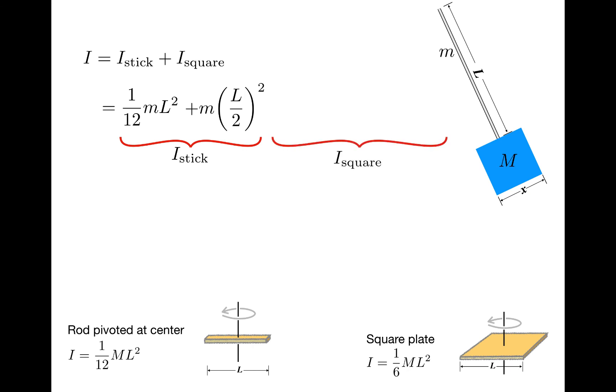Now let's look at the square. The rotational inertia of a square rotated about an axis passing through its center of mass is one-sixth ml squared, where L is the side length. In this case, the side length is x, so I have to add one-sixth mx squared.